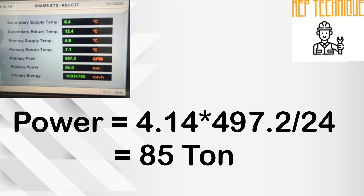So now we will put this formula to calculate the power. We multiply 4.14 with 497.2 and divide by 24. The result is 85 ton. If we check the ETS meter reading, it is also 85 ton.